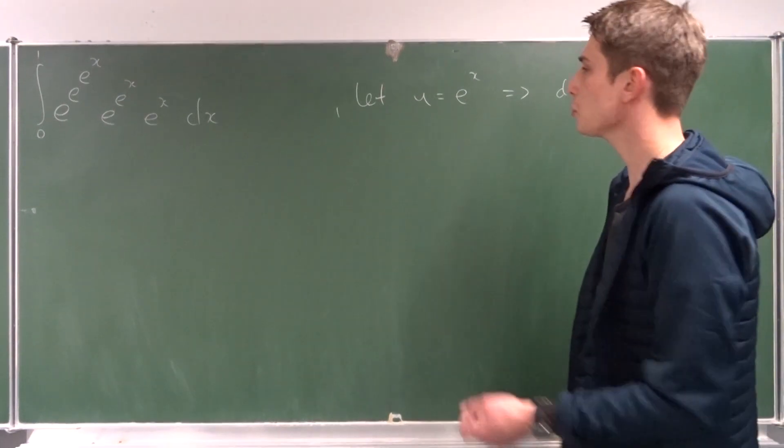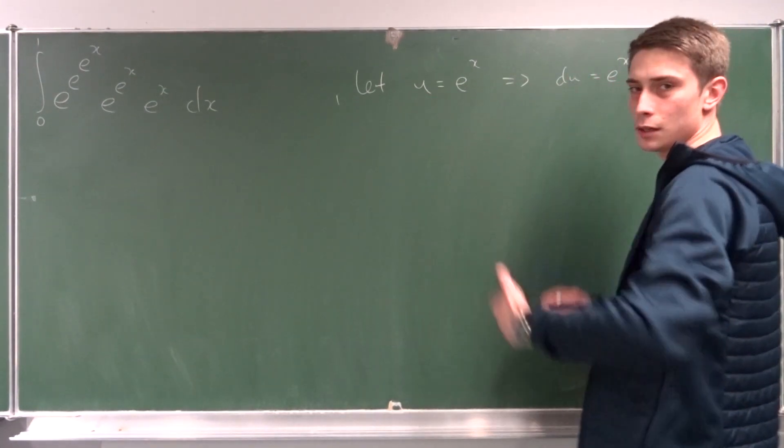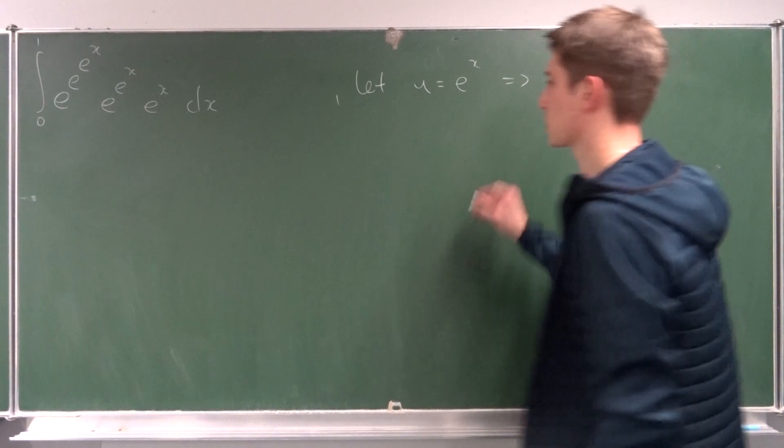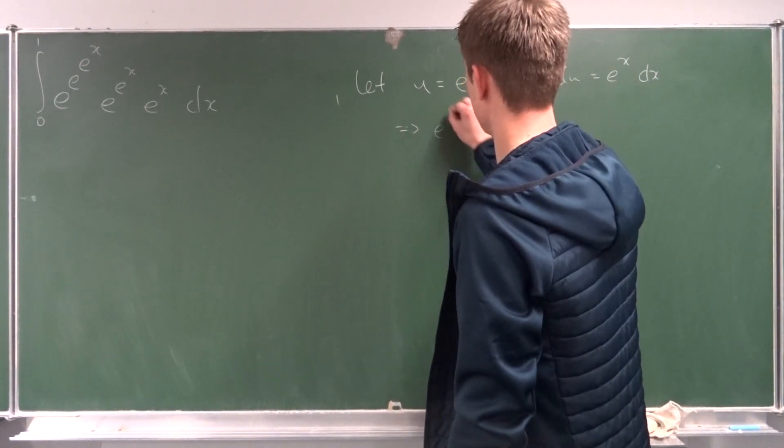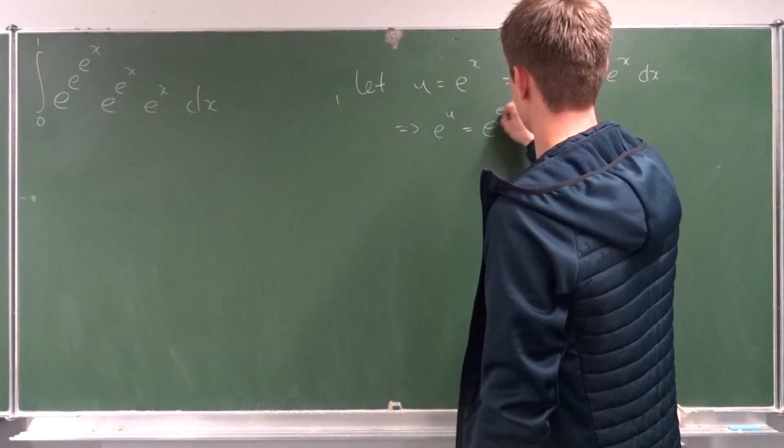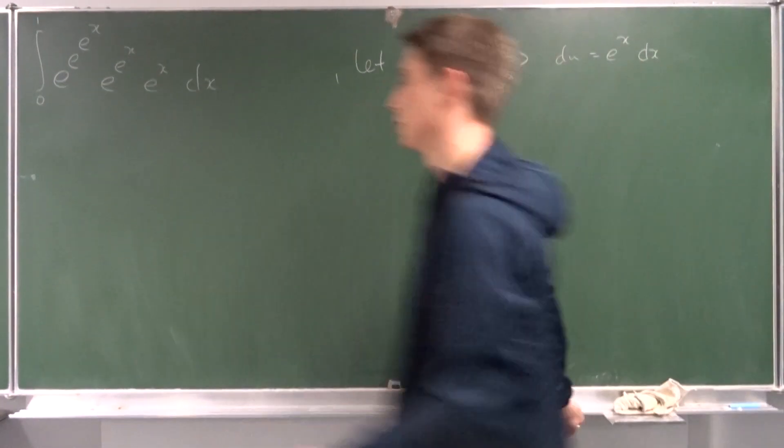Okay. So, what else can we conclude? Well, we can take e to the x on both sides. So, that also means that e to the u equals e to the e to the x. And now, we can plug all this information in.